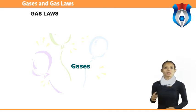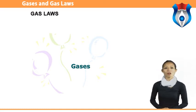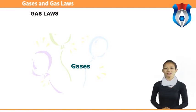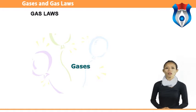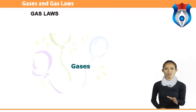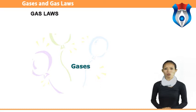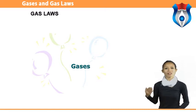Gases existed since the beginning of time — often referred to as air or oxygen. However, in the late 18th century, air became known as gas and people were able to distinguish between different types of gas. Towards the end of the 18th century, scientists started testing and developing laws that later became known as the gas laws. These laws describe properties of gases and how they react in different situations. In order to understand the gas laws, we need to define a few terms.